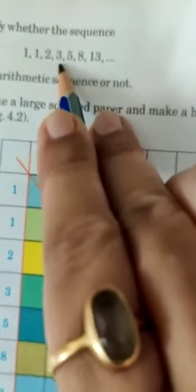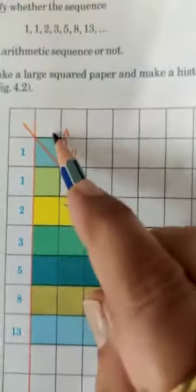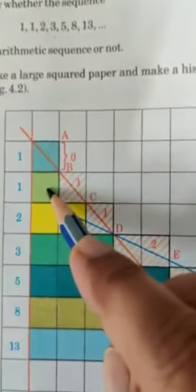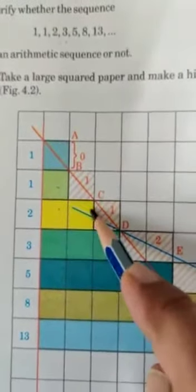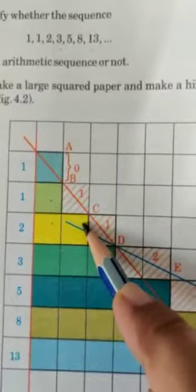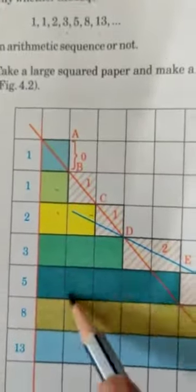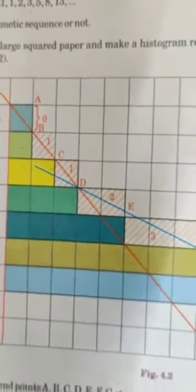We have taken one example: 1, 1, 2, 3, 5, 8, 13. We shade 1, then 2, then 3, then 5, and so on.